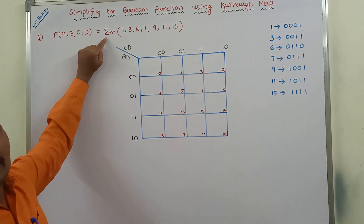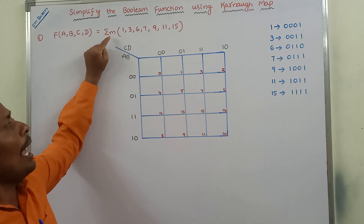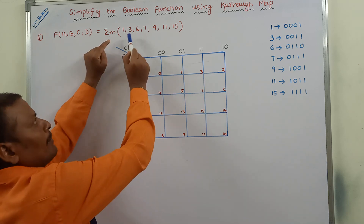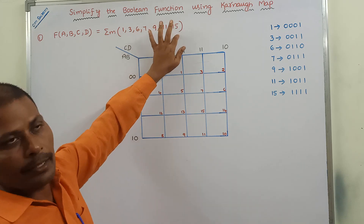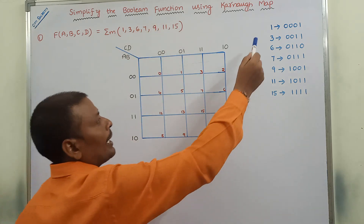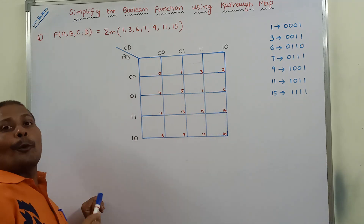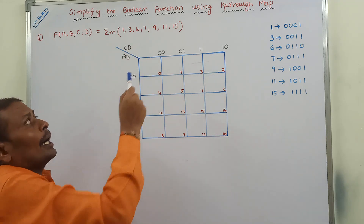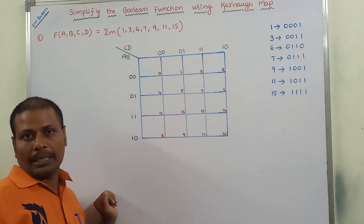Sigma is nothing but sum. Small m is nothing but min terms. So sigma m is sum of min terms. The given min terms are 1, 3, 6, 7, 9, 11, and 15. Since we are using a 4-variable Karnaugh map, each min term must be written in 4-bit binary form.